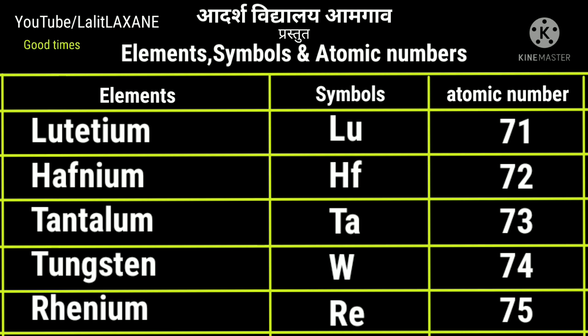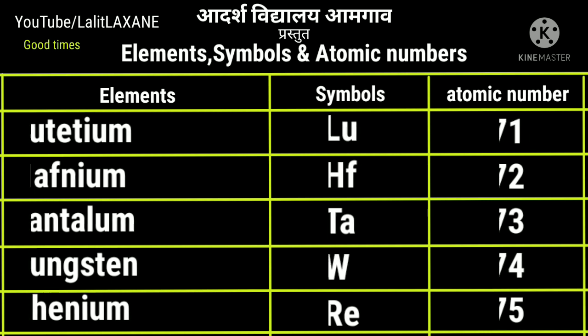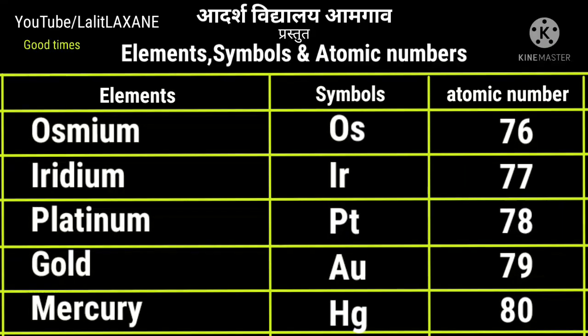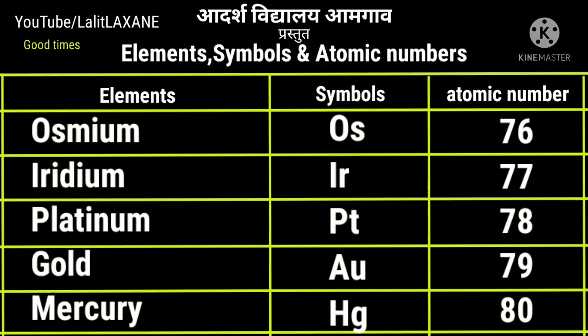Tantalum Ta, atomic number 73. Tungsten W with atomic number 74 — W stands for wolfram. Rhenium Re with atomic number 75. Osmium Os, atomic number 76. Iridium Ir with atomic number 77. Platinum Pt, 78. Gold with symbol Au and atomic number 79. Mercury Hg, 80 — Hg stands for hydrargyrum.